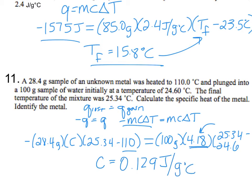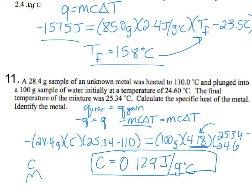Double-check your math before reporting a final answer. Whenever you're doing Q equals mCAT, remember: you can never have a negative specific heat. A negative specific heat would mean as you heat something up it cools itself down, which is impossible. You also can't have a negative mass — keep that in mind when solving.